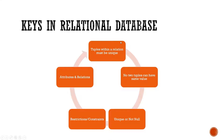If we use the keys in the database table, then we have to set the keys in the database table. When you say unique value, there can be restrictions and constraints — that is, conditions we can use in the relational database table. When we have to set the attributes and relations, we can set conditions on attributes and relations.